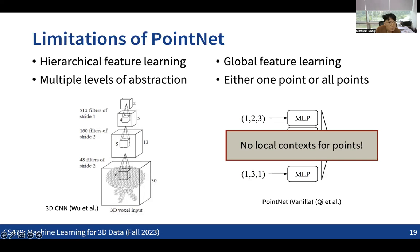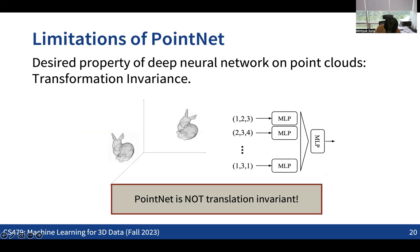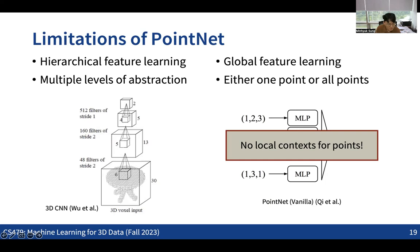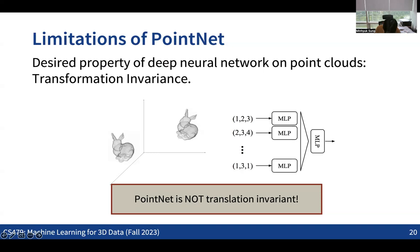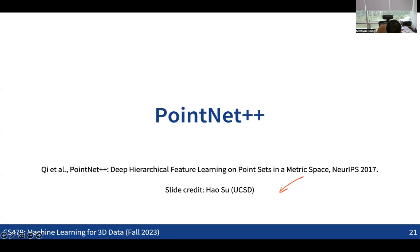Another limitation is transformation invariance. While the T-Net helps enforce some degree of transformation invariance, it doesn't guarantee it. How to truly achieve translation invariance is one technical challenge with PointNet. These limitations motivate PointNet++. Before moving on, any questions about PointNet?